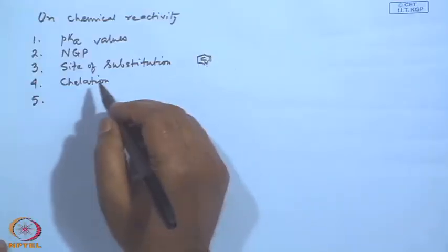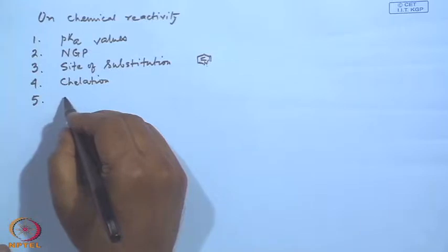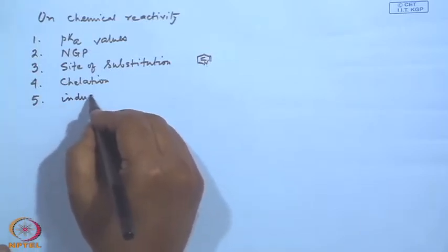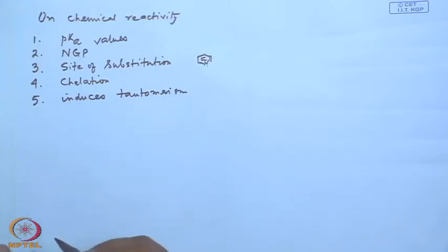Another very important case is chelation — the formation of a ring involving a metal. Sometimes it also promotes remote functionalization. Normally a reaction takes place at the functional groups or at the alpha or beta positions, but chelation can also promote reactions at a very remote place, far from the position of the heteroatom. Additionally, the site of substitution can also involve nucleophilic substitution. Another factor is that heteroatoms induce tautomerism.